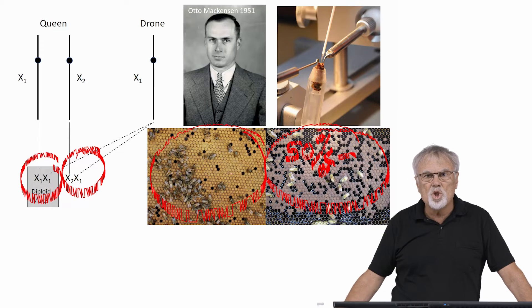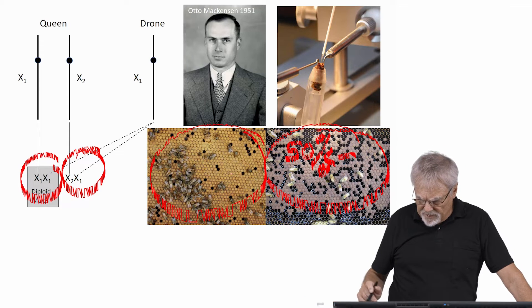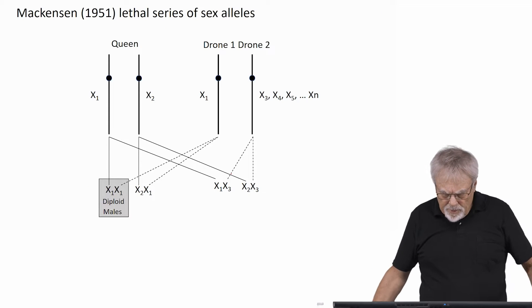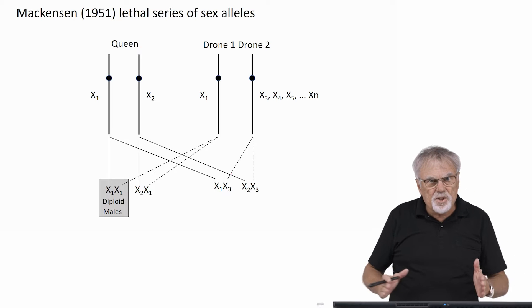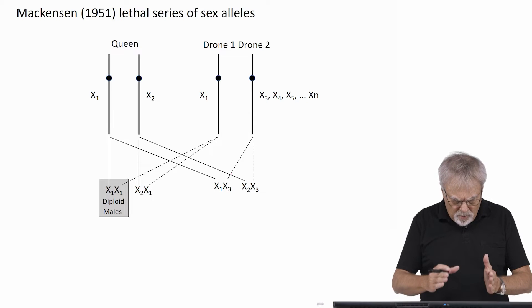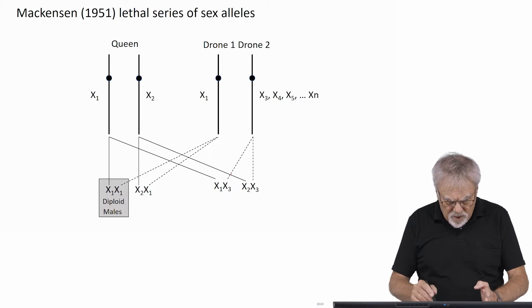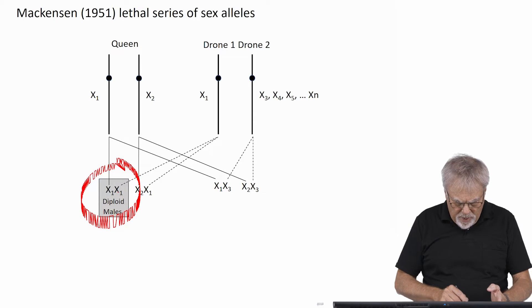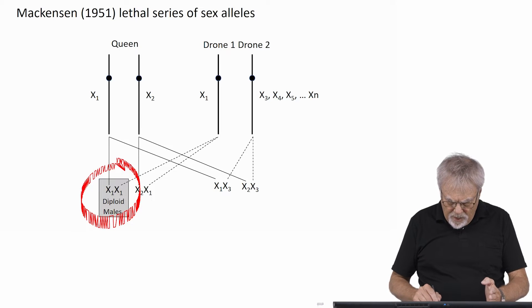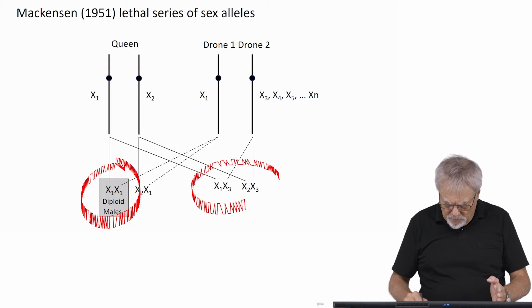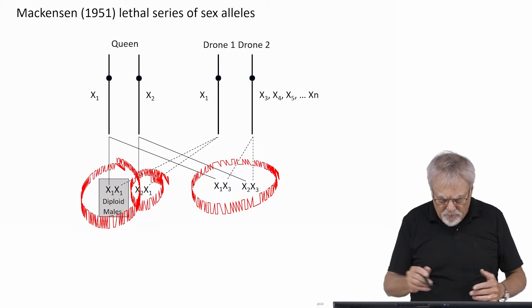The brood pattern on the right was called 'shot brood,' and that was one way of determining whether you had a queen who had mated with too many males that had sex alleles similar to hers. He went on to show that there's a whole series of alleles — he called it the lethal series of alleles. A queen with alleles X1 and X2 who mated with an X1 male would produce homozygous diploid males. But offspring from matings with X3, X4, or X5 males would not produce diploid males. So he determined there must be a whole set of different alleles in an allelic series.